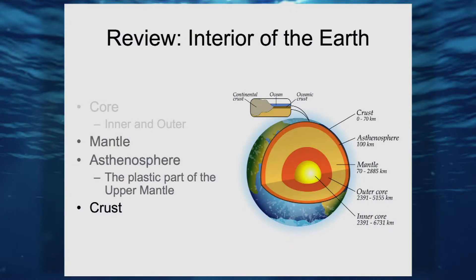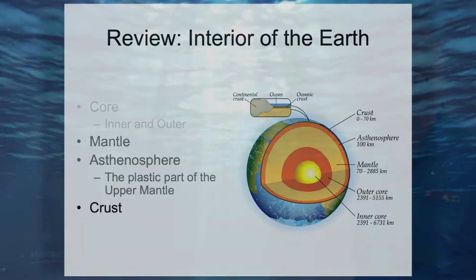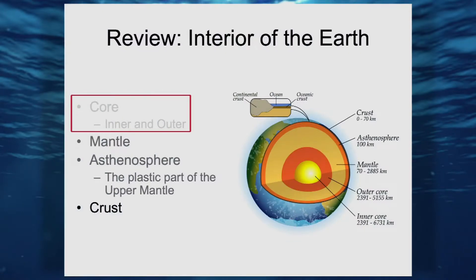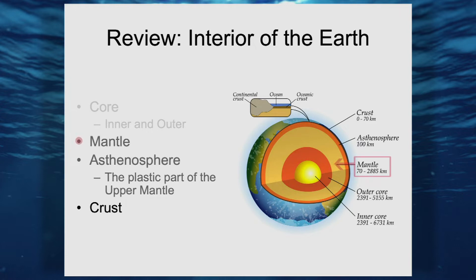To understand crustal plates and the source of earthquakes, we have to take a quick step back and review the interior of the Earth. I have grayed out the core — inner and outer — which is the innermost part of the Earth. We don't have to worry about that for earthquakes. But up in the mantle, just outside the outer core, that is a fluid part of the Earth's interior. The molten rock, which is called magma, can move — very, very slowly, over geological time scales.